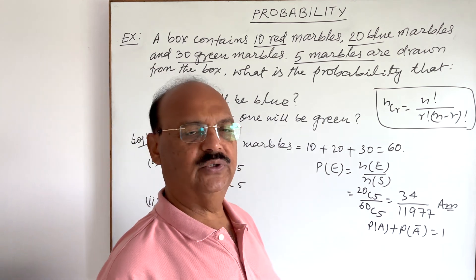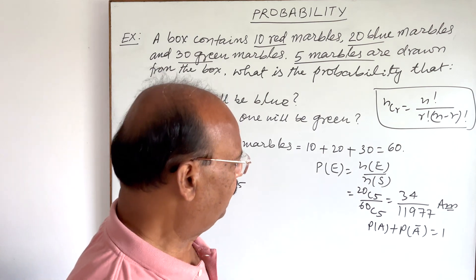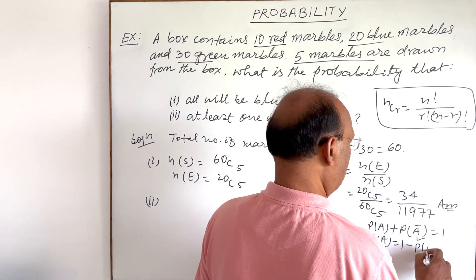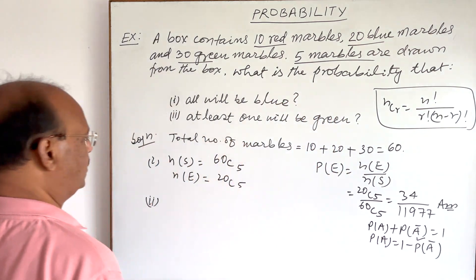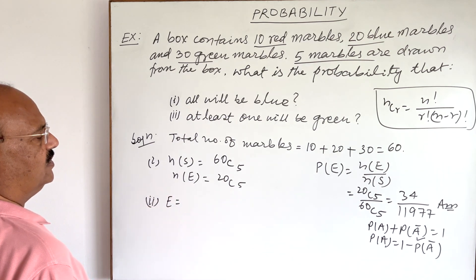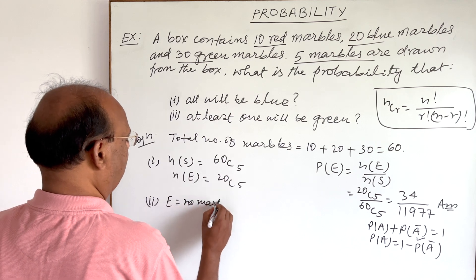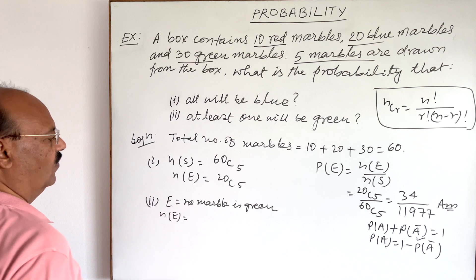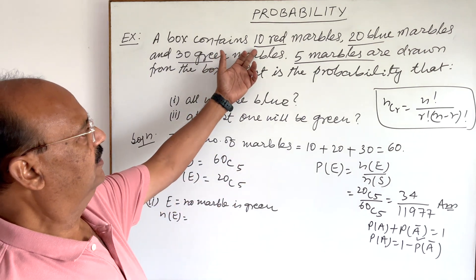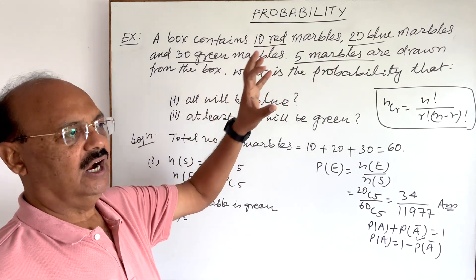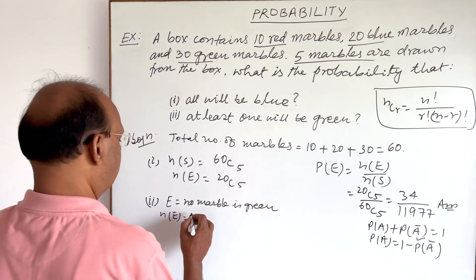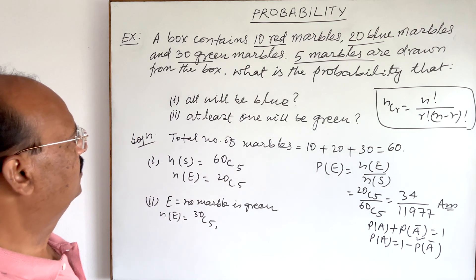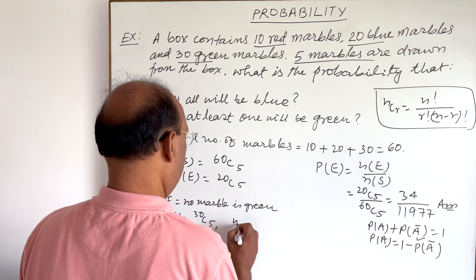'At least one green' includes: one green, two green, three green, four green, or five green. So first we find P(no marble is green). If no marble is green, the marbles must be either red or blue, giving 10 + 20 = 30 marbles. Out of these 30, we take five, so NE = 30C5. NS remains 60C5.